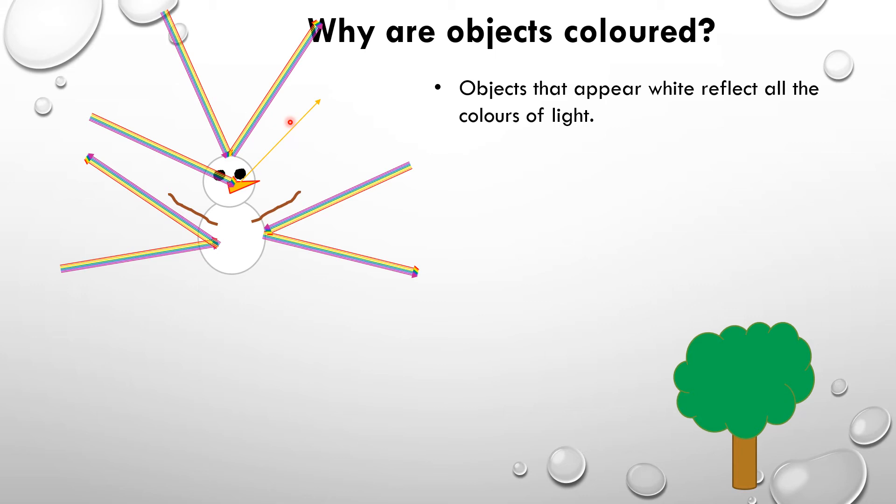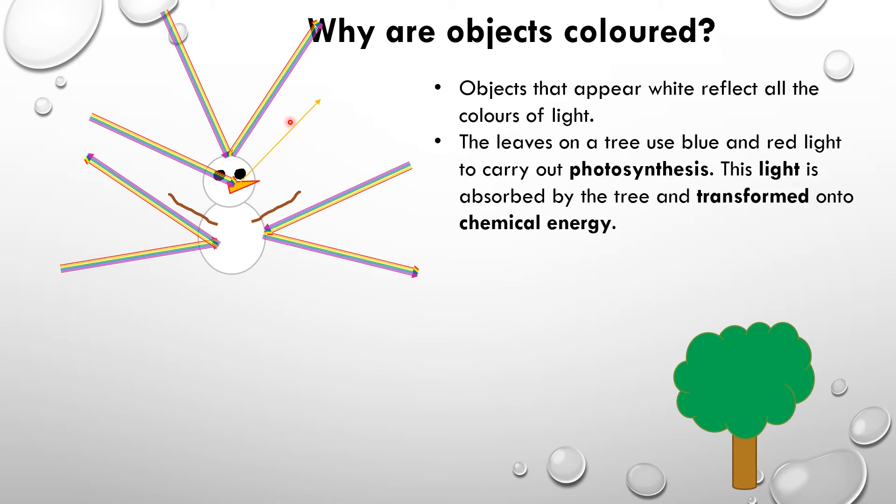What about the leaves of a tree? Why do they look green? Well, the leaves of a tree undergo a process called photosynthesis. And in that process of photosynthesis,